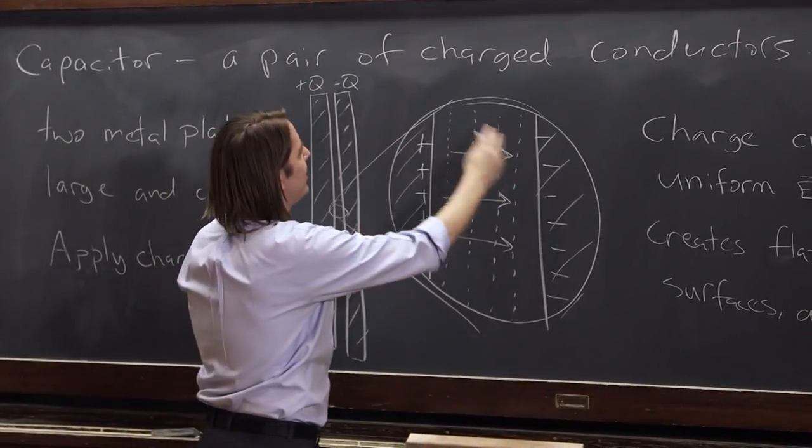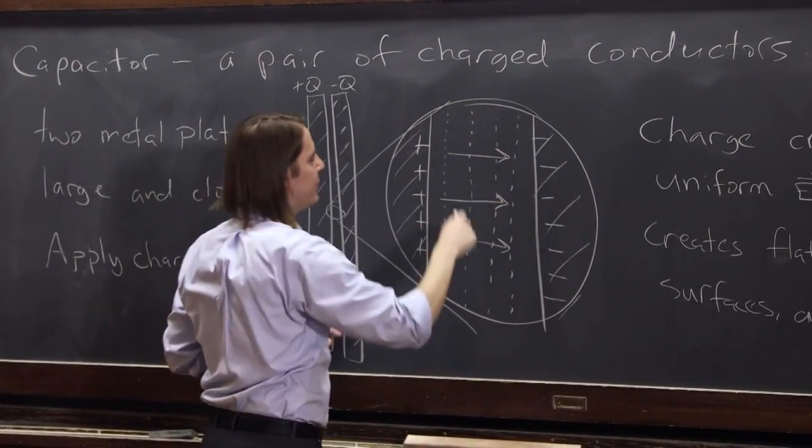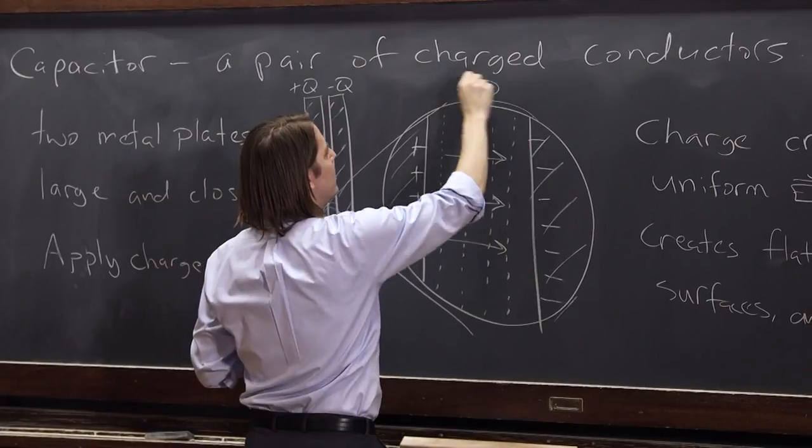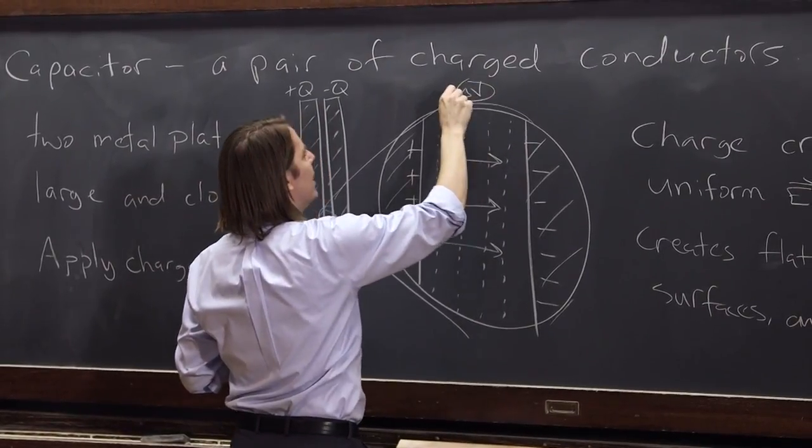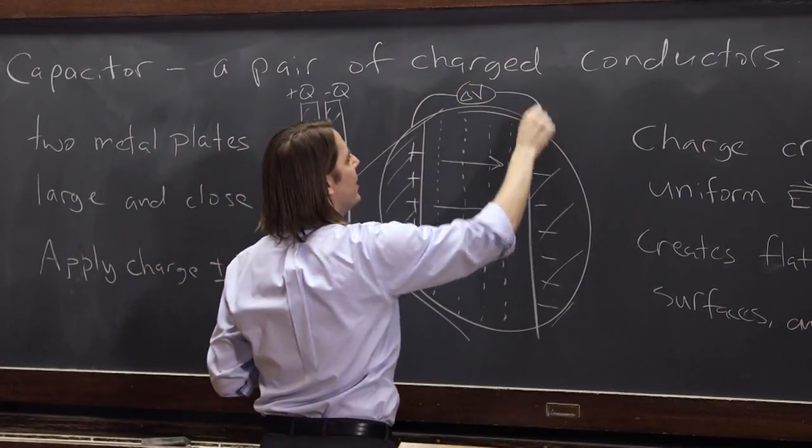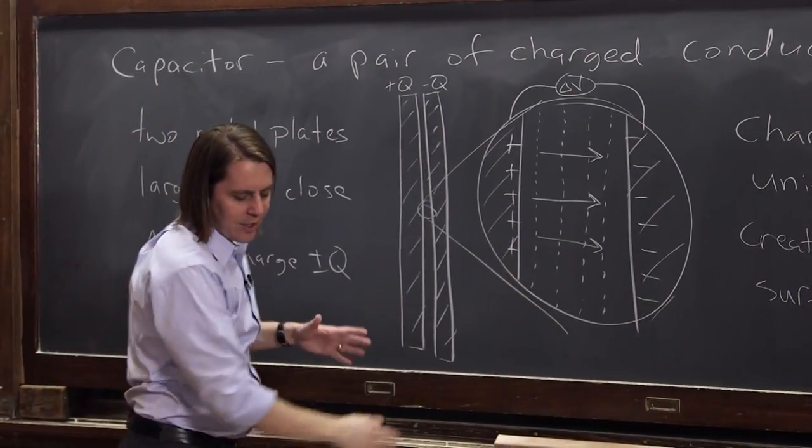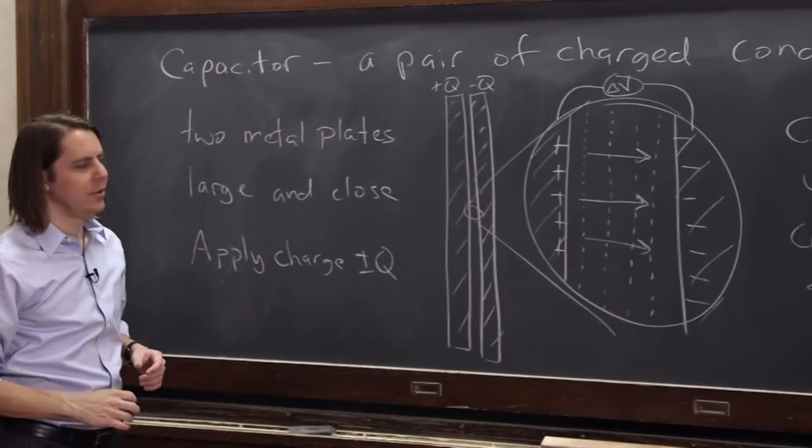So if these potential lines are dropping, then you have some potential here, you have some potential here, and between them, you have a delta V. If I were measuring it, I would measure a positive on this side and negative on that side. So inside these two plates, this is what's going on.